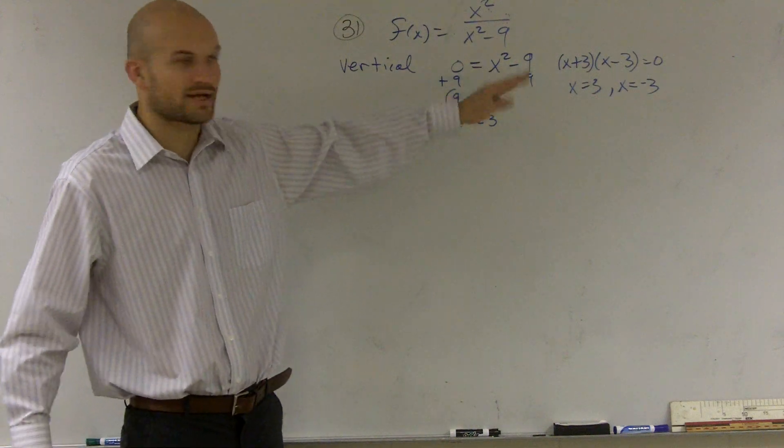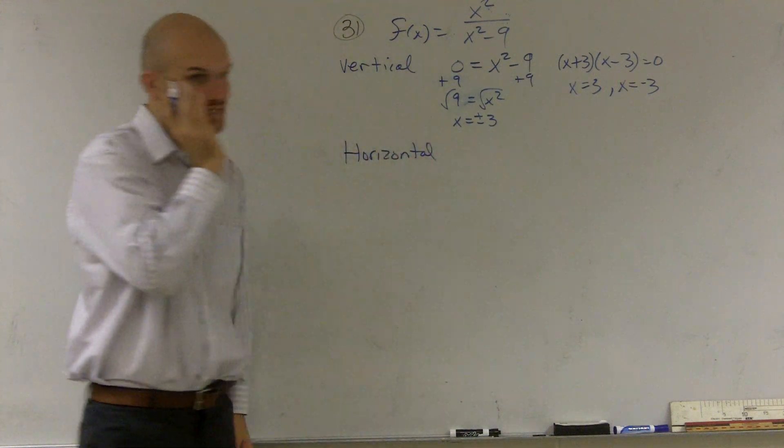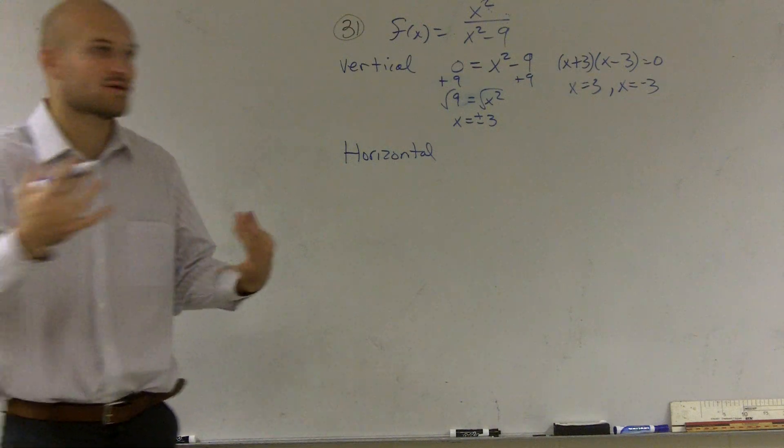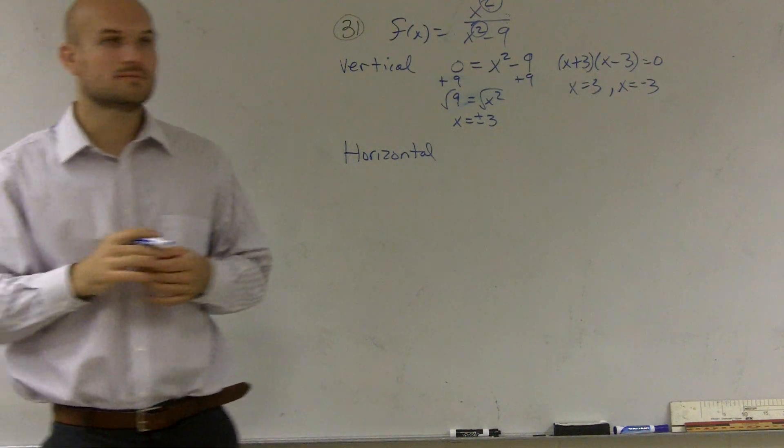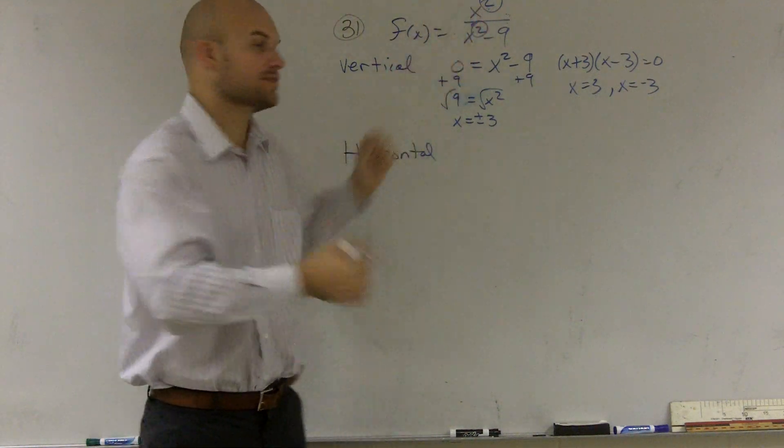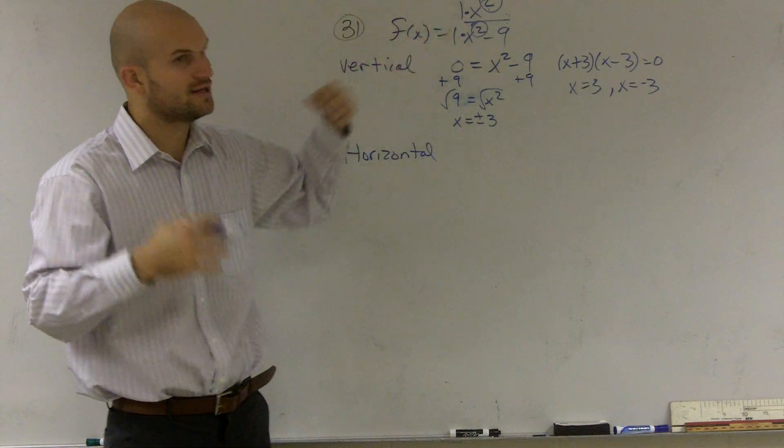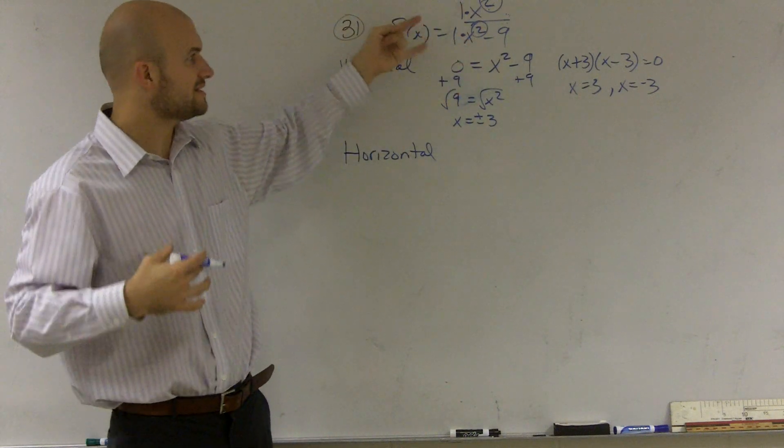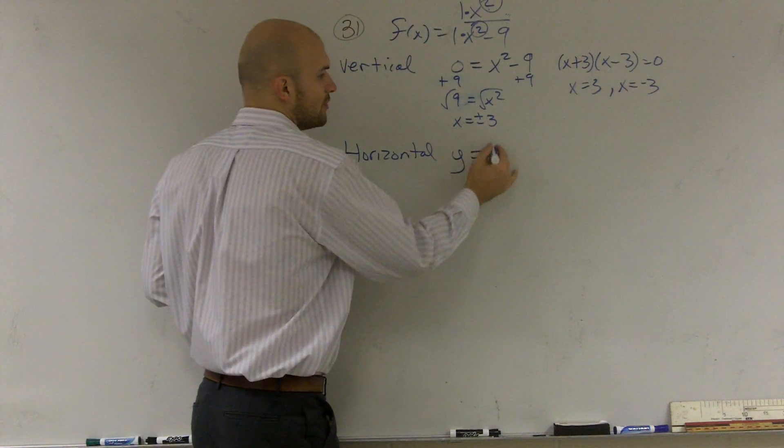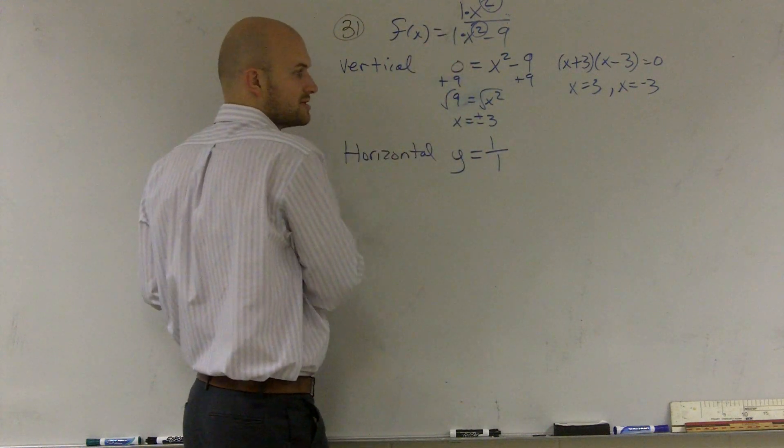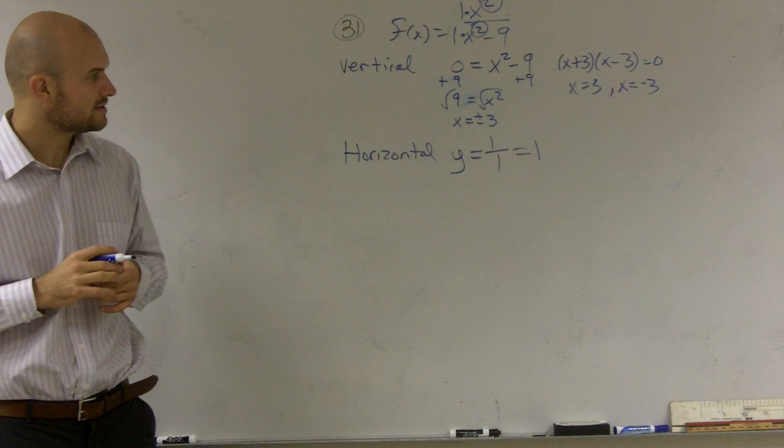So my vertical asymptote is x equals 3 and negative 3. Next one is horizontal. On a horizontal asymptote, we need to look and see the degrees. When you're dealing with horizontal asymptotes, you look at the degrees of your leading terms. When the two degrees are equal to each other, you take the coefficients of your two terms. So I take the coefficient, which would be 1 over 1. So my horizontal asymptote, y equals my top coefficient, 1, divided by my bottom coefficient, which ends up equaling 1.